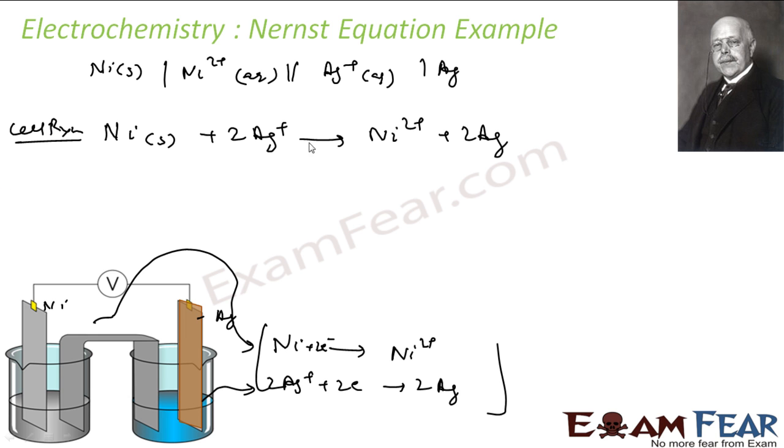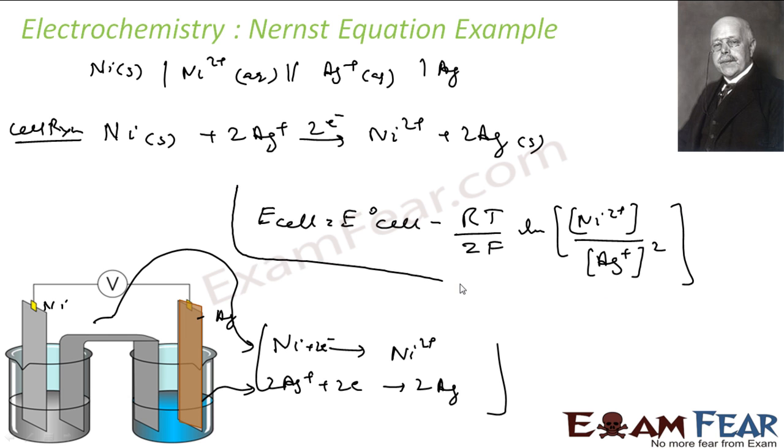I can use my Nernst law formula. E cell is nothing but E naught cell minus RT by NF, LN of concentration of anode (concentration of Ag is one because it is solid) divided by concentration of Ni (solid, one) and concentration of Ag+. There are two Ag+, it will be square. That is the Nernst equation for this reaction.